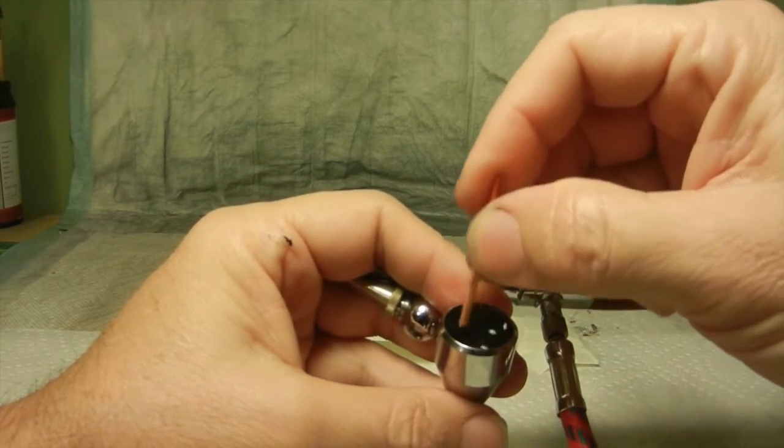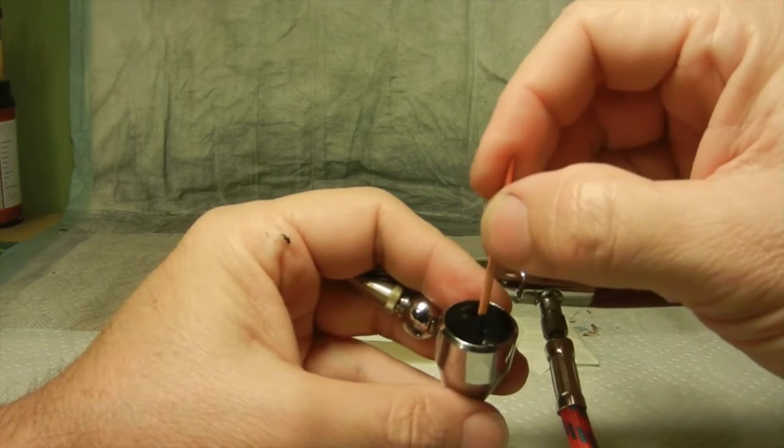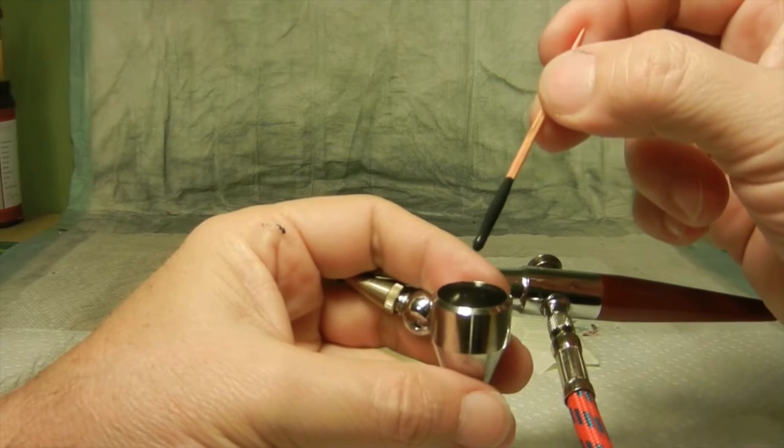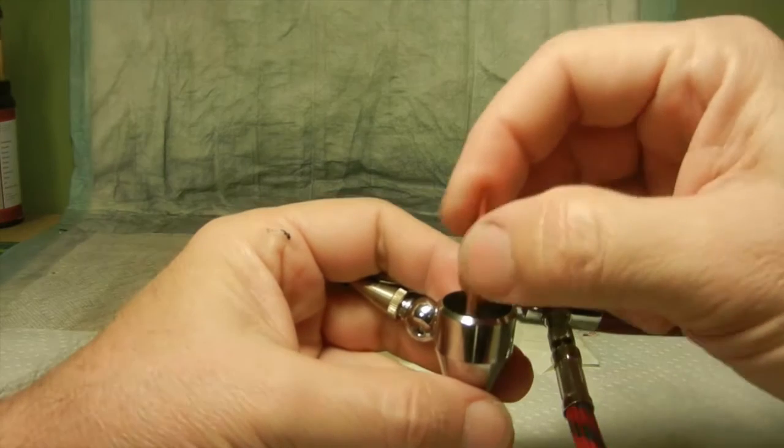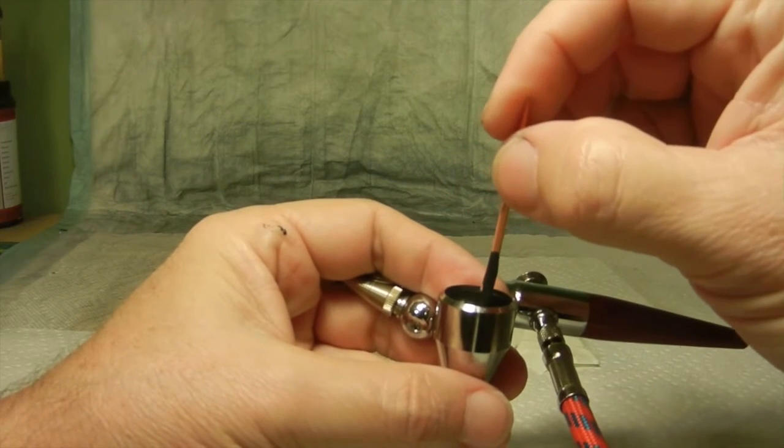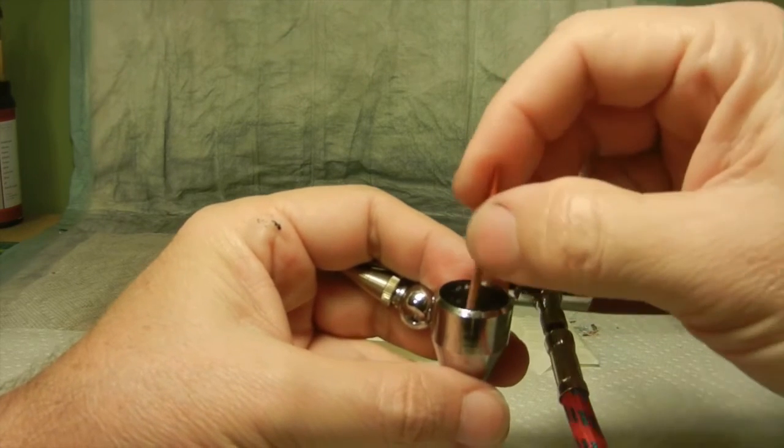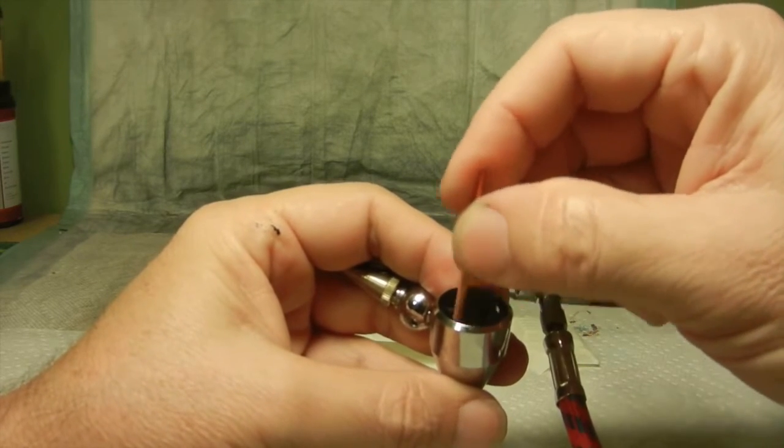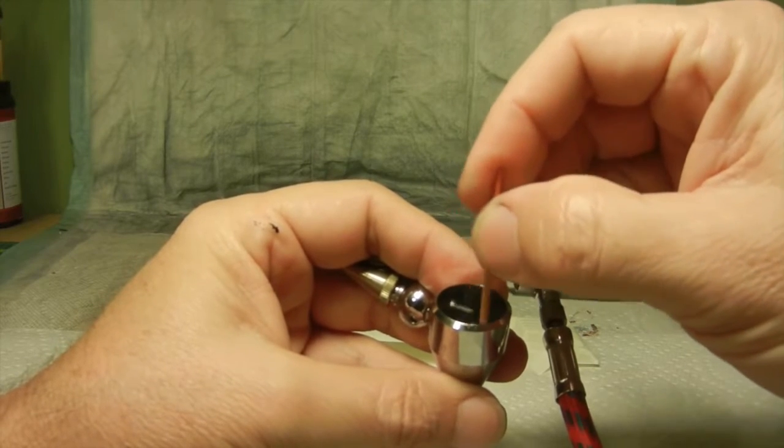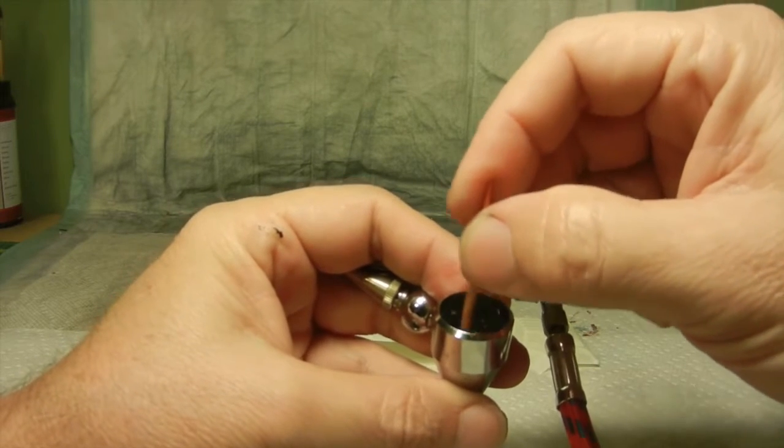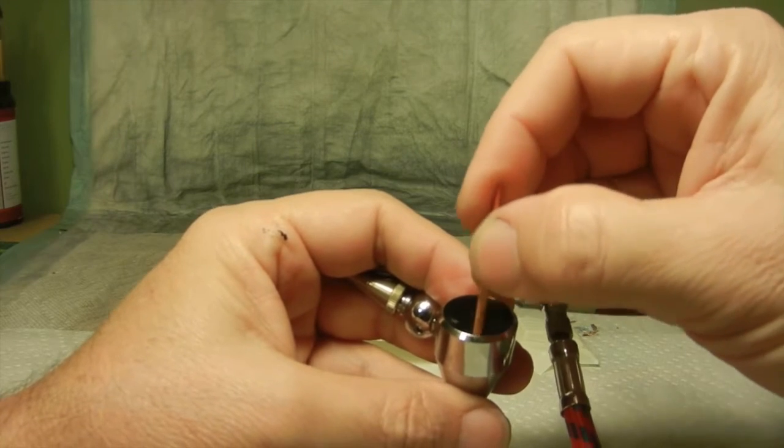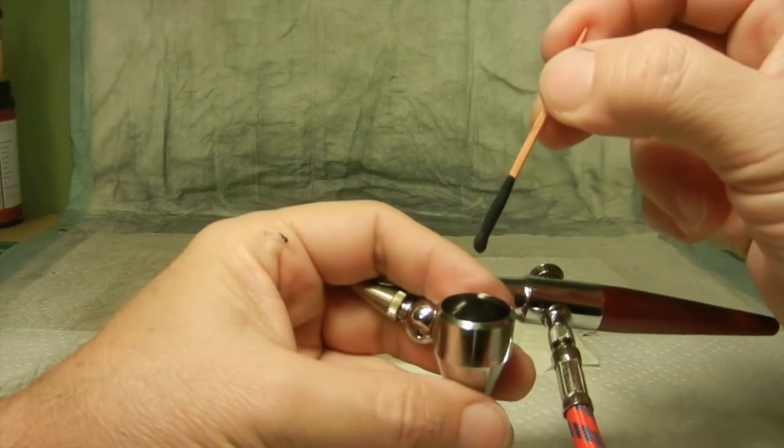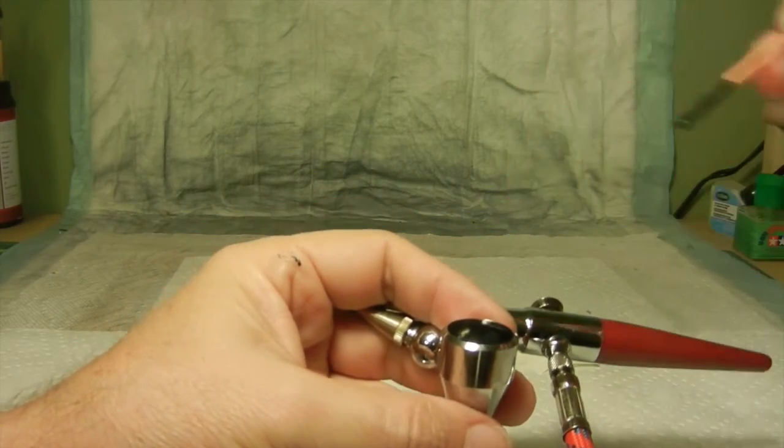And like I said, you want the consistency to be around two percent milk. I basically just kind of see how it drips off the toothpick. Sometimes I'll put it on the side of the cup and see how it runs down. But like I said, you don't want it too thin, otherwise it's going to be more of a water splatter on the part you're spraying. But that looks pretty good.